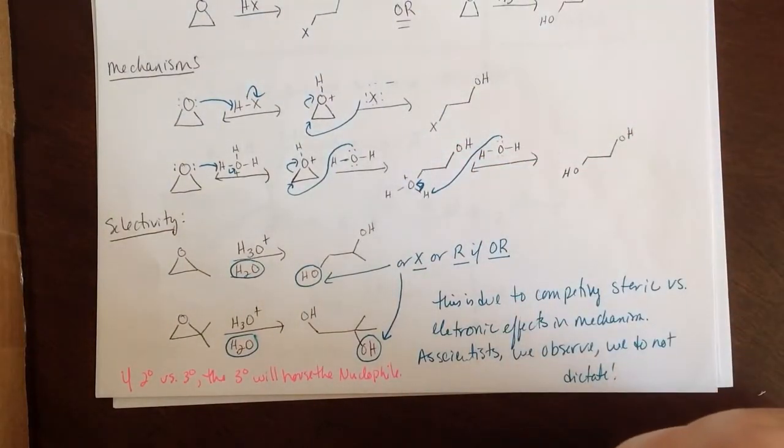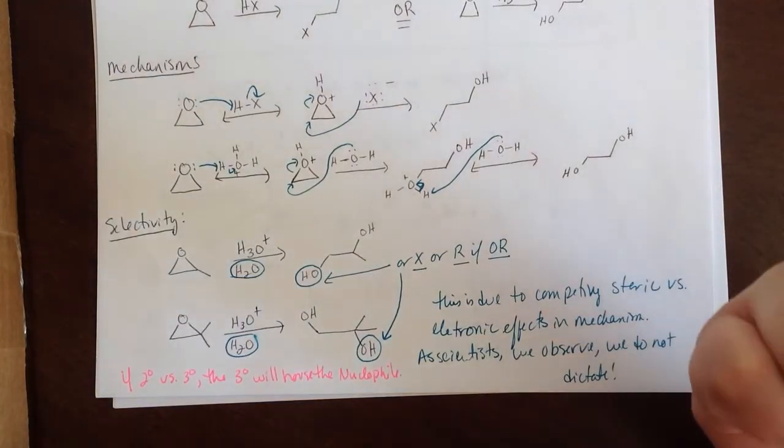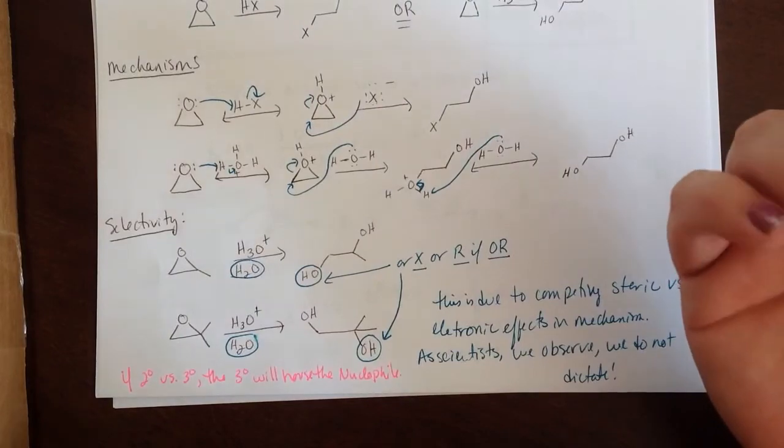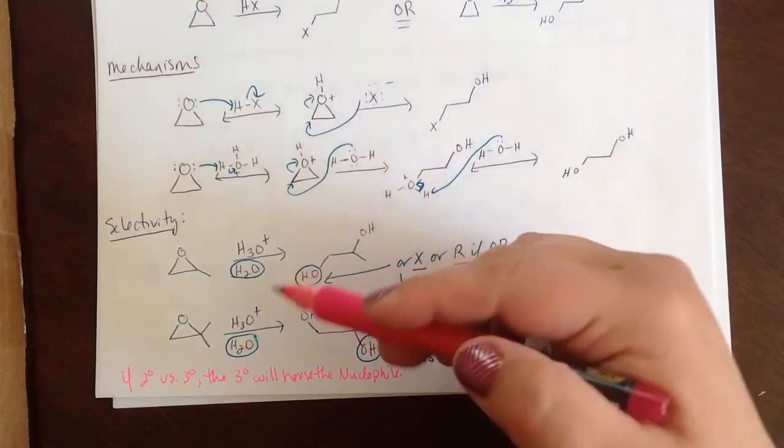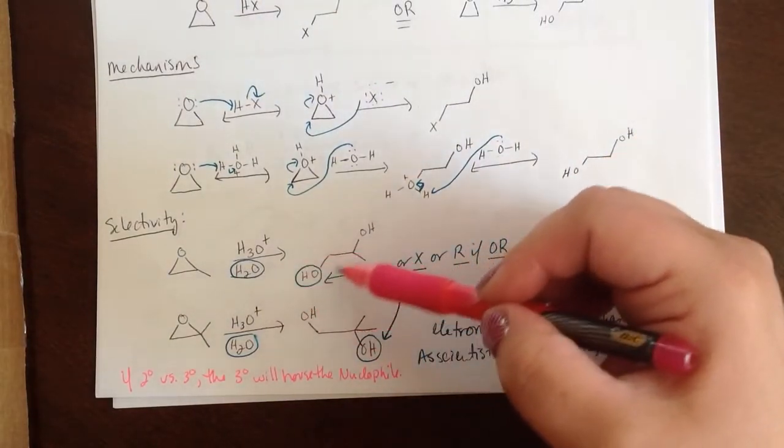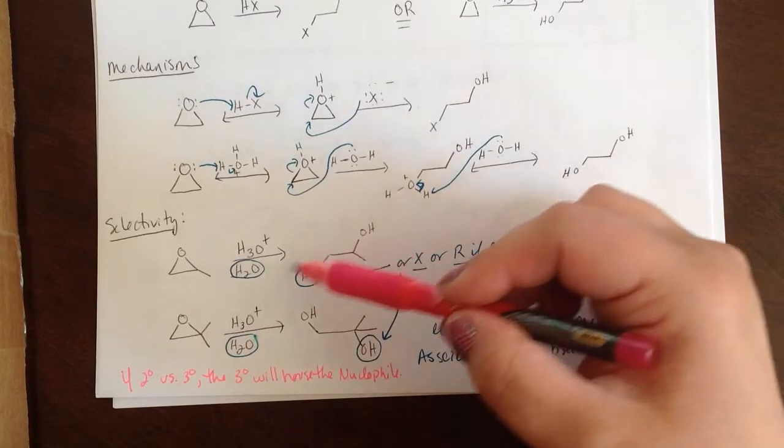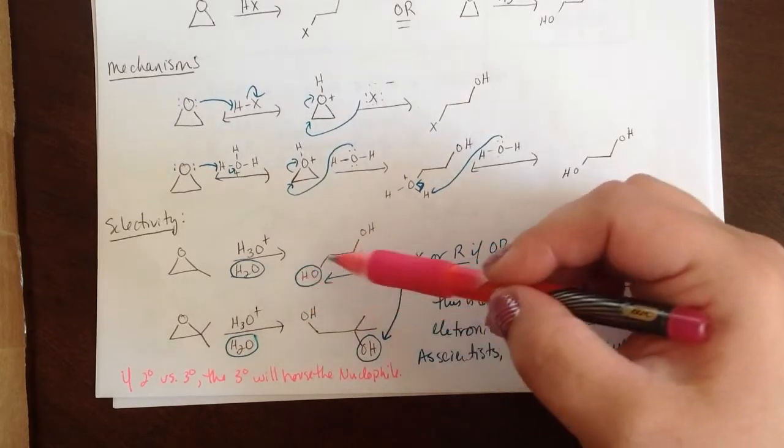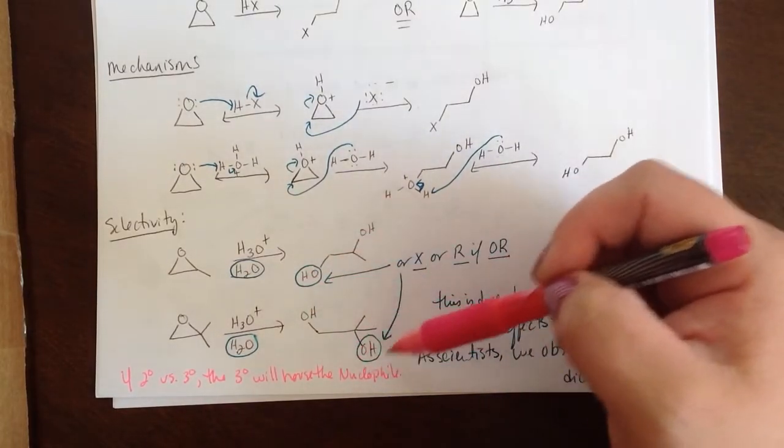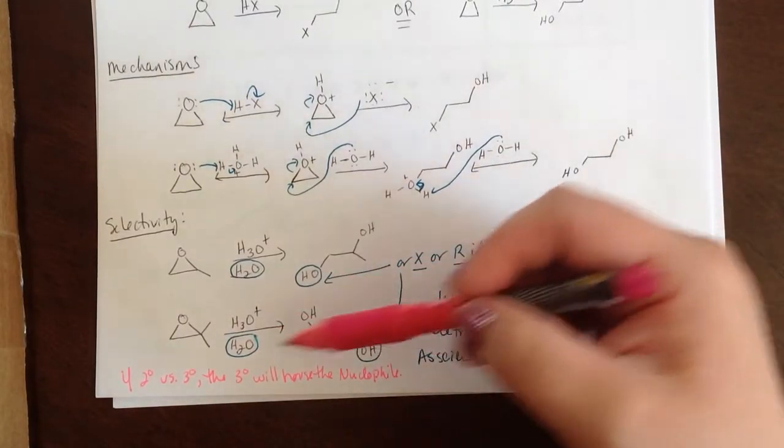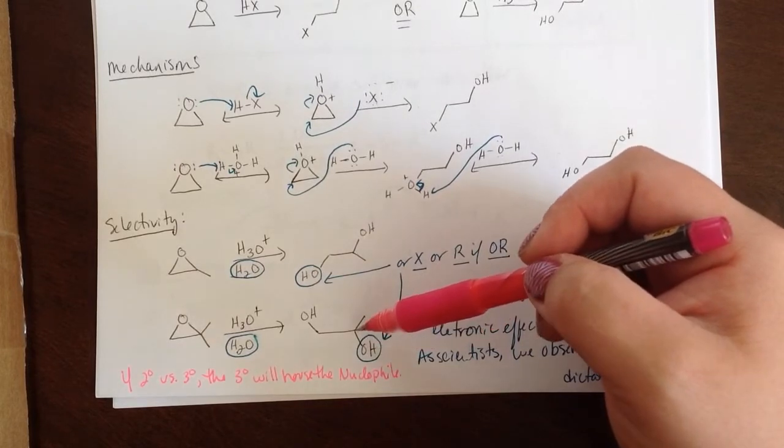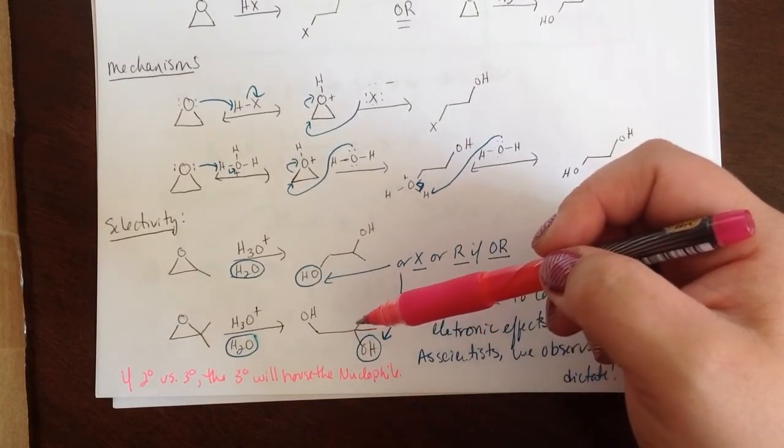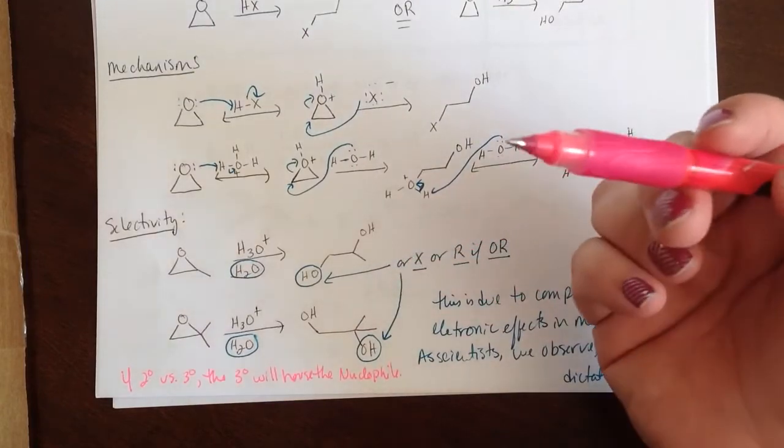What we found is that this has to do with a difference in either steric hindrance or electronic effects. And at a certain point, the electronic effects win. Because this would be the most sterically available position. But electronically, the OH prefers to go, or the nucleophile in this case would prefer to go to the most substituted carbon here. So it differs depending on what you have as a situation.